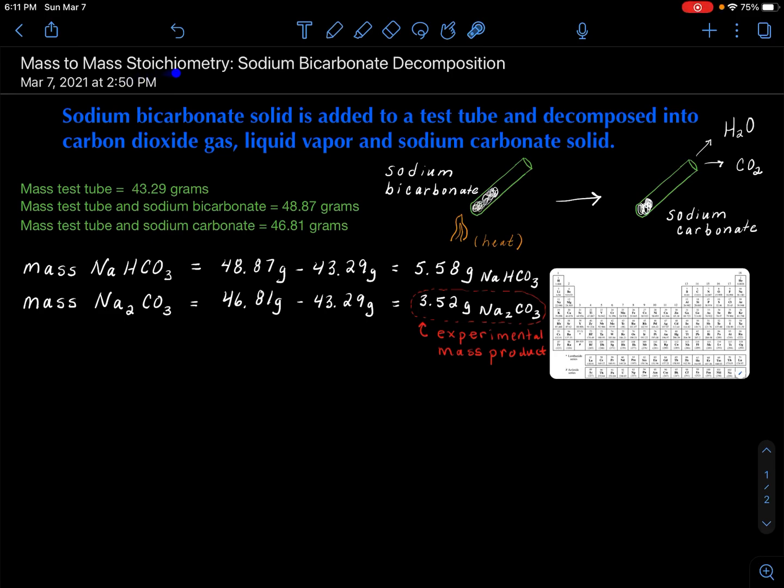Using mass-to-mass stoichiometry, I will prove the identity of the white solid from my sodium bicarbonate decomposition video that is also on my YouTube channel. In this video, I will prove that the white solid that was produced from this chemical change was sodium carbonate. I'm going to use mass-to-mass stoichiometry to do that.